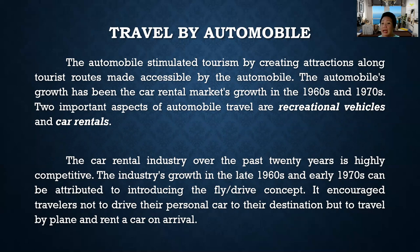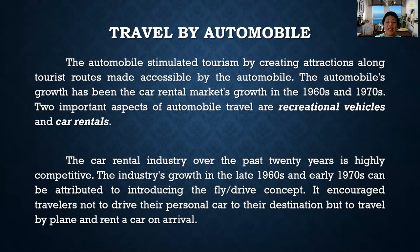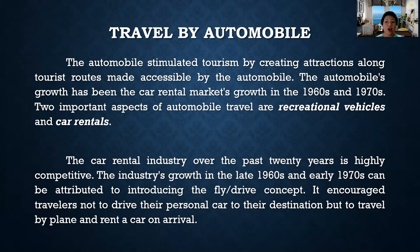There are two important aspects of automobile travel: recreational vehicles and car rental activities. Recreational vehicles, or RVs, are cars converted into home facilities, used when people go camping and sleep there overnight. For car rentals, the industry is highly competitive. Its growth in the late 1960s and early 1970s can be attributed to introducing the fly-or-drive concept, which encouraged travelers to travel by plane and rent a car on arrival at the destination.